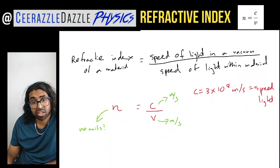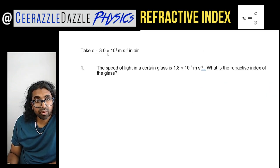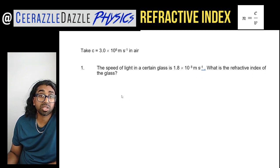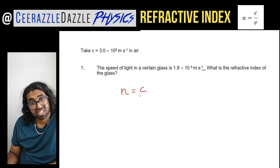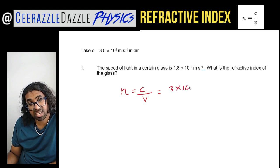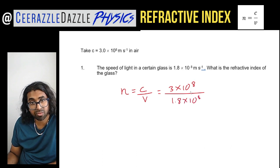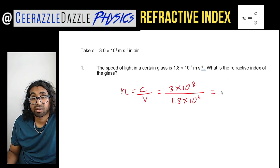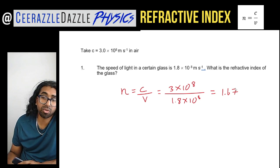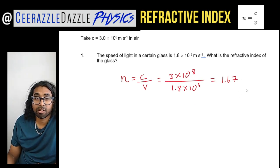Let's use this formula and do a couple of calculations. Take c = 3 × 10⁸ m/s. The speed of light in a certain glass is 1.8 × 10⁸ m/s — what is the refractive index of the glass? Write down the formula: n = c / v = (3 × 10⁸) / (1.8 × 10⁸) = 1.67. Notice there are no units because it's the refractive index.